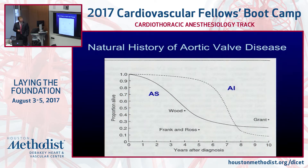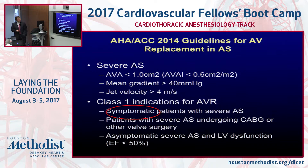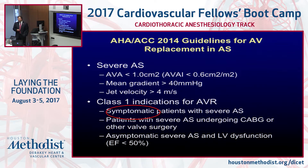The AHA/ACC guidelines for aortic valve replacement in AS: severe AS is defined as aortic valve area less than 1 cm², mean gradient greater than 40 mmHg, and jet velocity greater than 4 m/s. Class I indications for AVR include symptomatic patients with severe AS, patients with severe AS undergoing CABG or other valve surgery, and even moderate AS at the time of CABG should be considered for concurrent AVR since within a couple of years they'll likely be in the severe range. Asymptomatic severe AS with any evidence of LV dysfunction is also an indication for surgery.